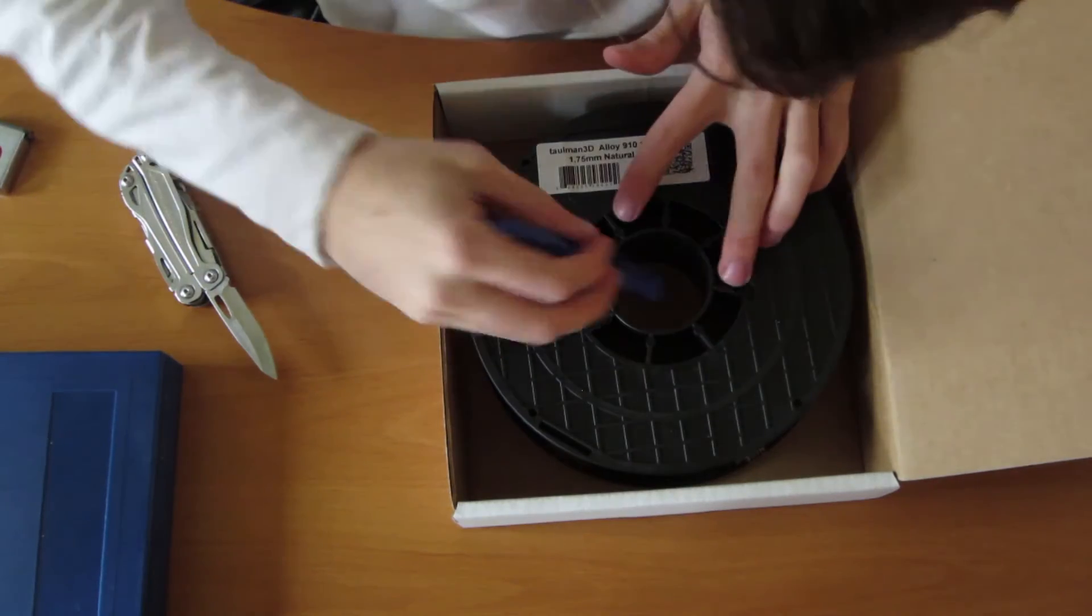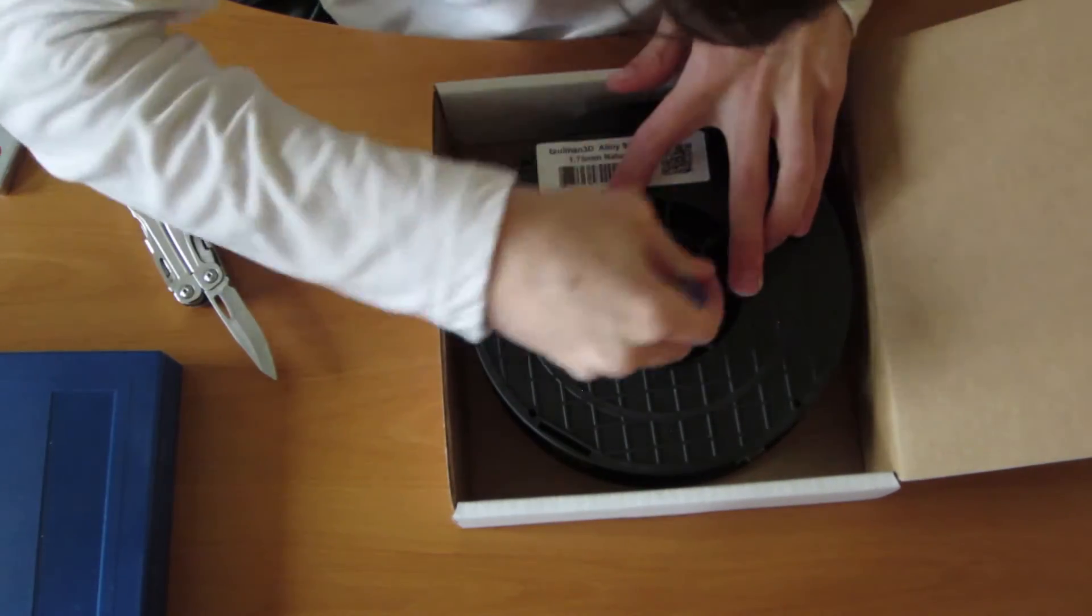And once you do that and it looks all good, you're going to just draw a circle around the inner diameter. Now that that's done, you're going to take the spool out and you have to figure out which side you want the filament coming out of.